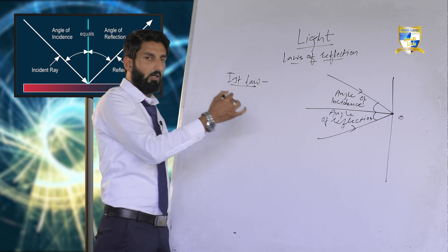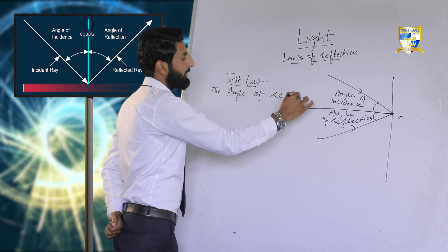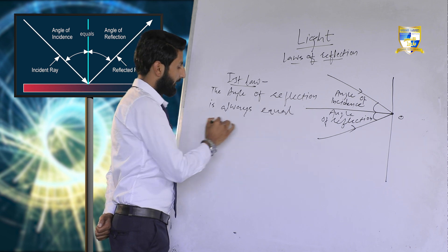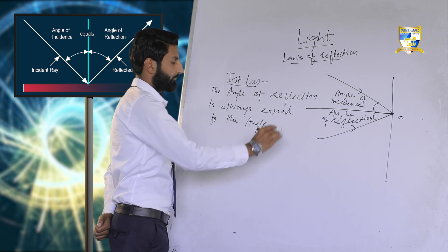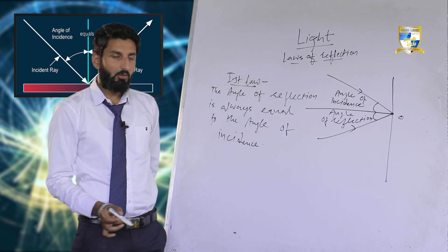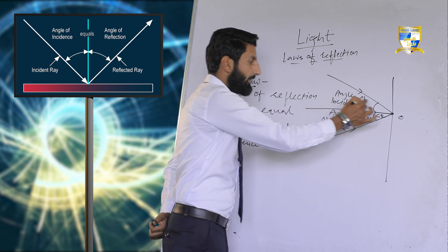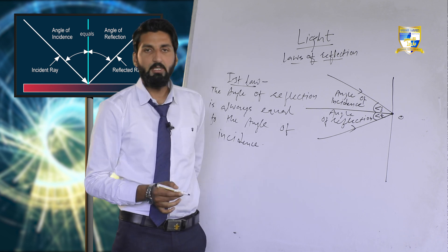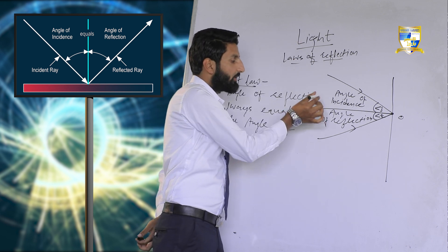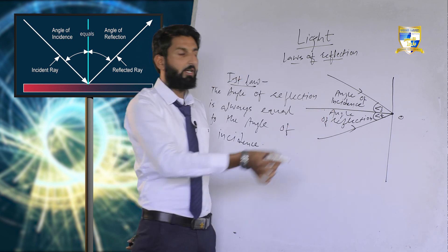We can write the statement of the law as: the angle of reflection is always equal to the angle of incidence. This angle is represented by r, and this angle by i, and they are always equal. When the ray of light comes from a source and strikes the surface, it makes an angle with the normal, and that angle will be exactly equal to the angle made by the reflected ray with the normal.